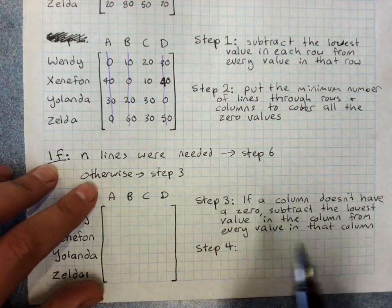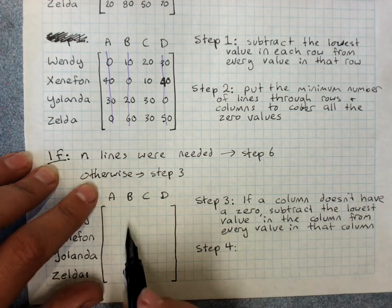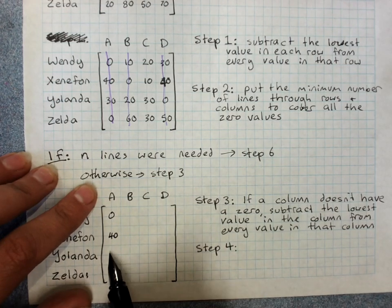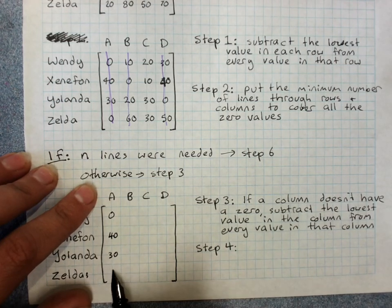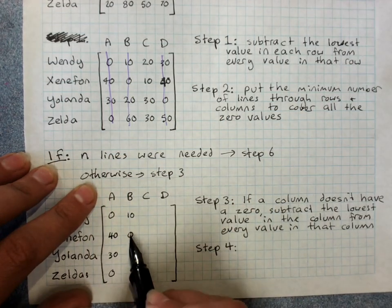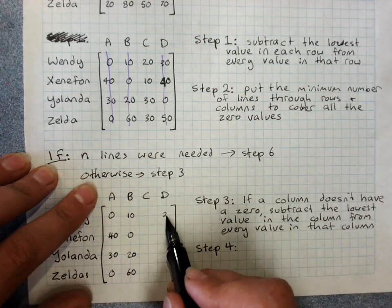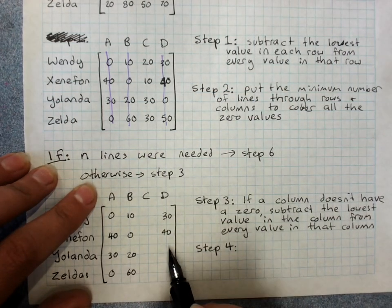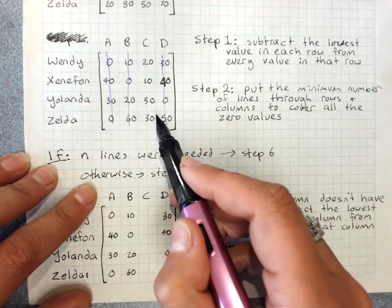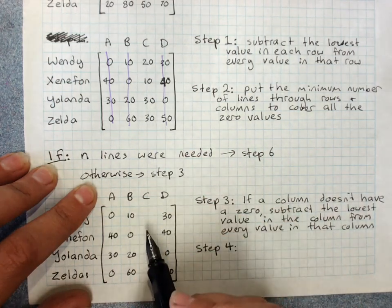So we put all the other values in, in the columns that do have zeros. Those go in, these go in. But column C doesn't have a zero, the smallest value is ten, so I'm taking away ten from every value.